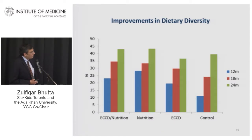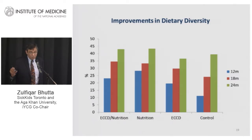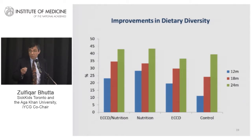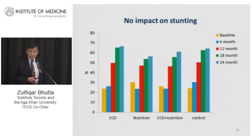There was not a clear impact on dietary diversity. Diets did improve over time, but there was not a huge difference between nutrition clusters and child development clusters compared to controls — largely because this was a rural, relatively food-insecure population with no additional food supplements provided. We also did not find a significant impact on stunting, though there was some difference between groups for linear growth.